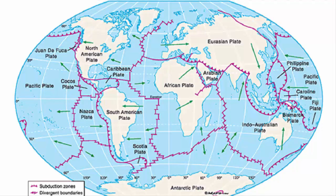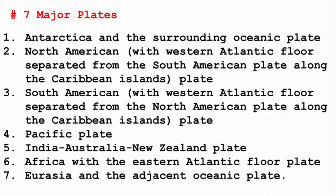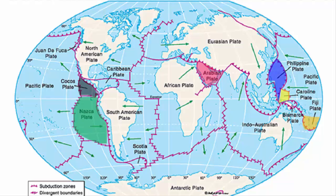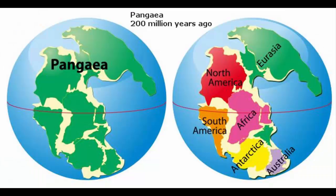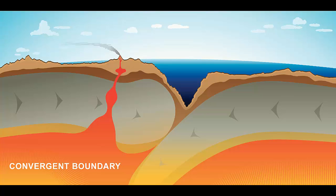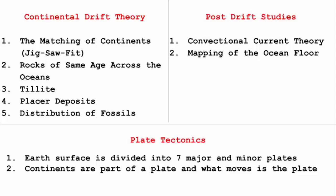According to plate tectonics, our entire Earth's surface is divided into seven major and some minor plates. The key argument is that continents do not move on their own — continents are part of these plates, and it is the plates that have been moving throughout Earth's history. So while Wegener said everything was once a single landmass named Pangaea, it is now believed that Pangaea existed due to the convergent mechanism of the plates on which continents reside — convergent meaning the plates came closer together.